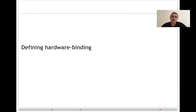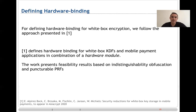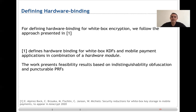Application binding can be useful when the application performs authentication operations — for instance, asking for a password that only the user knows, and only if the password is correct does the encryption take place. We consider both of these properties useful for white-box cryptography. We present a definition for hardware binding; for application binding we face some issues when trying to define it formally, which I will discuss shortly.